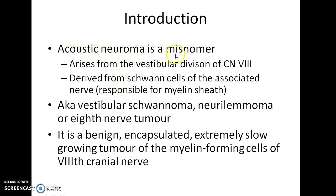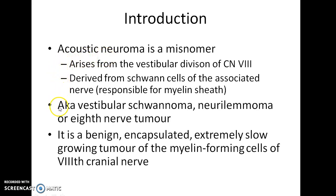The term acoustic neuroma is actually a misnomer because of two reasons. Firstly, the tumour arises from the vestibular division of the 8th cranial nerve, not from the cochlear division as indicated by the word acoustic. Secondly, the tumour is derived from Schwann cells of the associated nerve, which are responsible for the myelin sheath, and not from the nerve per se as indicated by the word neuroma. Acoustic neuroma is also known as vestibular schwannoma, neurilemoma, or 8th nerve tumour.